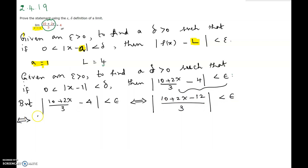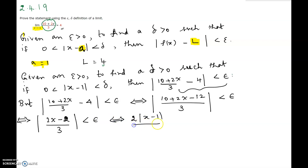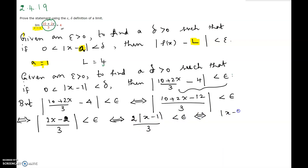This further simplifies to 2|2x - 1| / 3, which implies and is implied by 2|x - 1| / 3 less than epsilon, which in turn implies and is implied by |x - 1| < 3epsilon / 2.